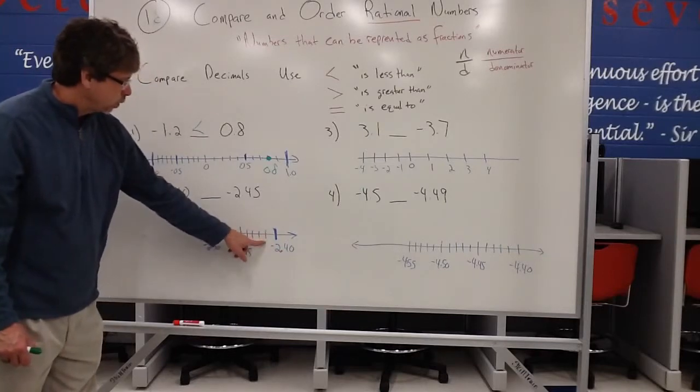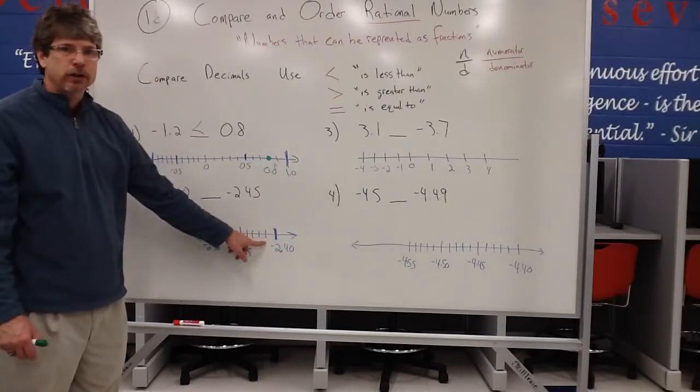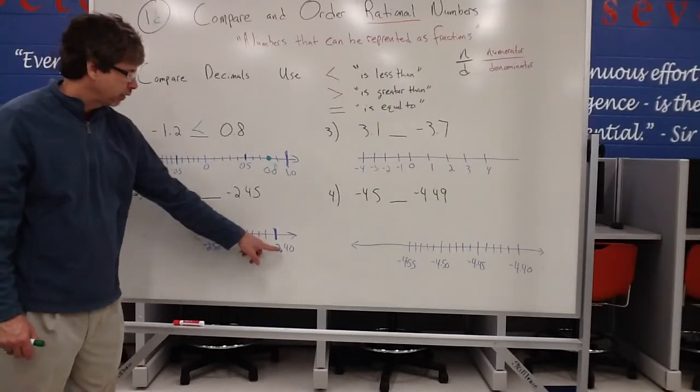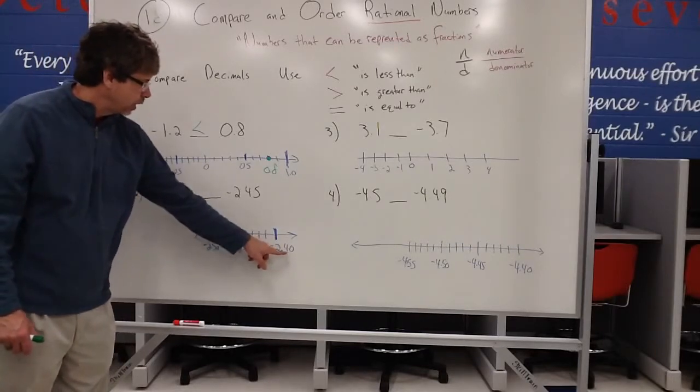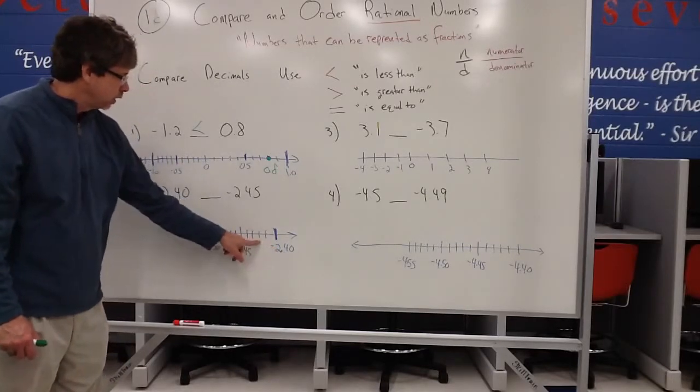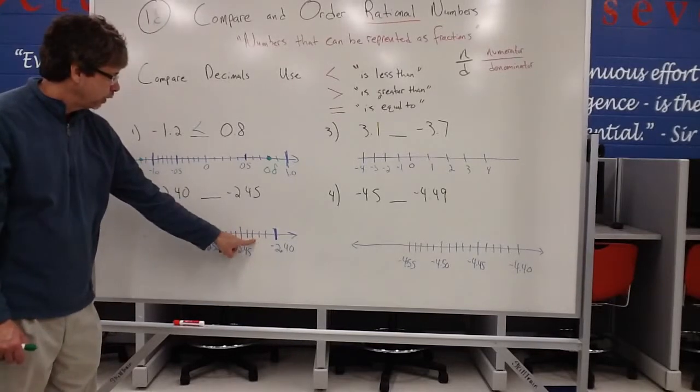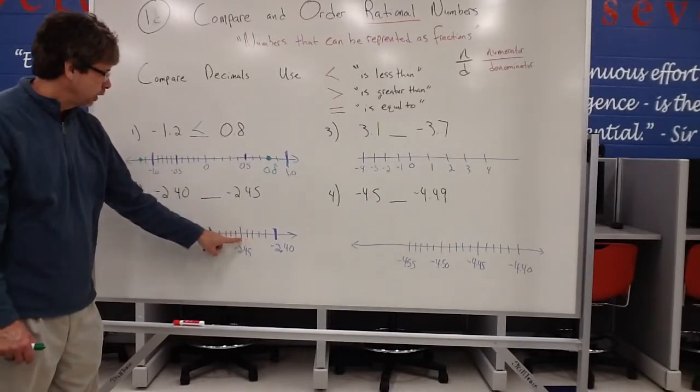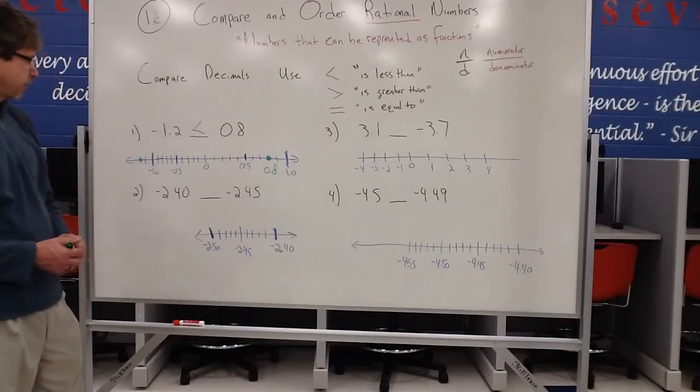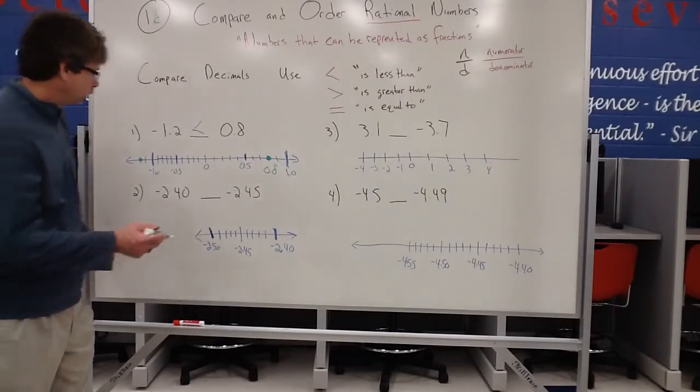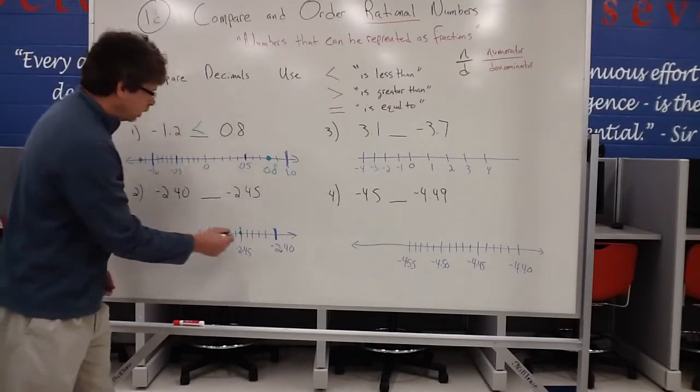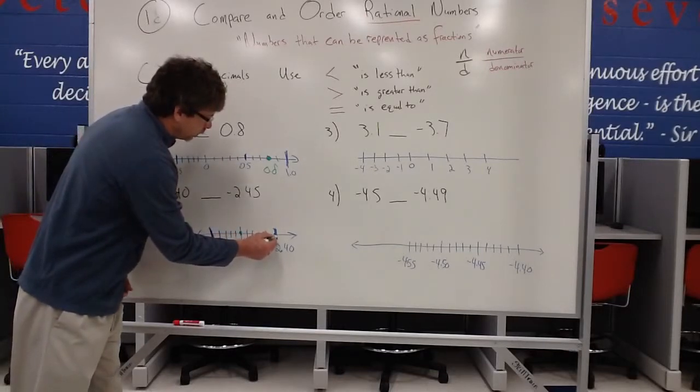So negative 2.40. This is negative 2.41. So these tick marks are actually counting by hundredths places. So this is like a hundredth. So 2 and 40 hundredths, 2 and 41 hundredths, 2 and 42 hundredths, 2 and 43 hundredths, 2 and 44 hundredths, and negative 2 and 45 hundredths. So negative 2 and 45 hundredths is there. And of course, negative 2 and 40 hundredths is there.